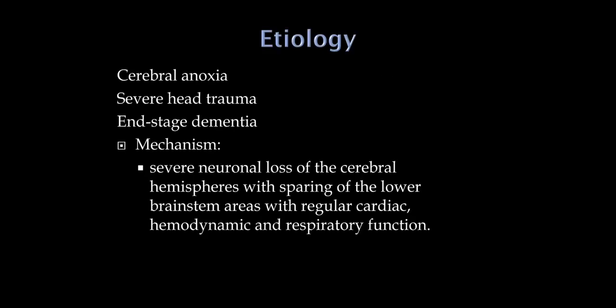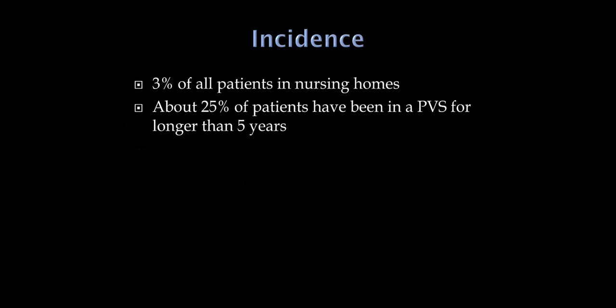In contrast to PVS, patients in a coma have their eyes closed and no sleep-wake cycles. The three most common causes of persistent vegetative state are cerebral anoxia, very severe head trauma, and end-stage dementia like Alzheimer's. The mechanism is diffuse neuronal dysfunction in the hemispheres, while the brainstem areas for cardiac and breathing function remain intact. About 3% of patients in nursing homes are in a persistent vegetative state, and amazingly, a quarter of them have been in that state for at least five years.